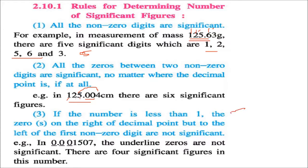This is very important and will come in questions. If the number is less than 1, for example 0.001507, the zeros on the right of the decimal point but to the left of the first non-zero digit are non-significant. So the insignificant zeros are ignored, and we have 1, 5, 0, 7 — that is, 4 significant figures.